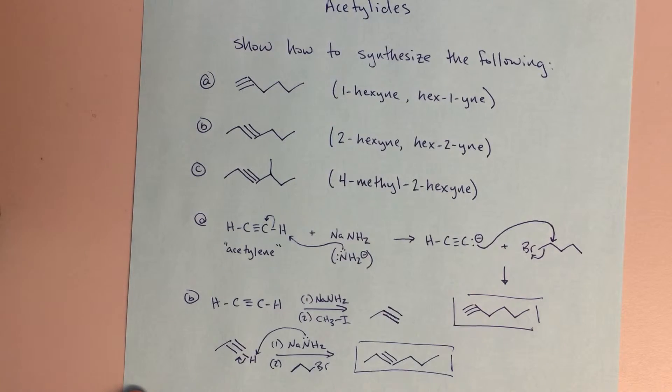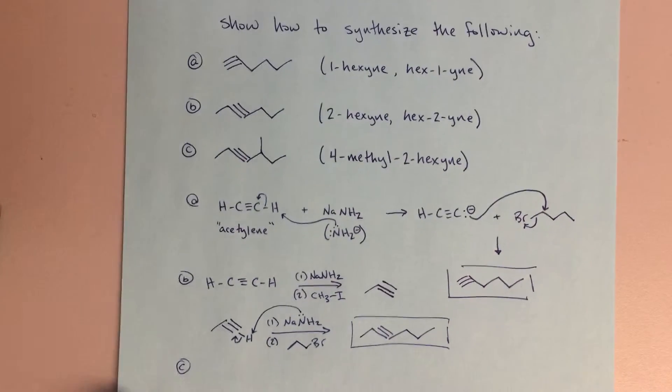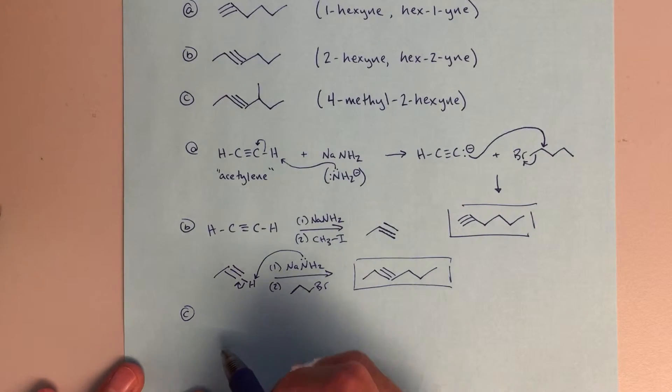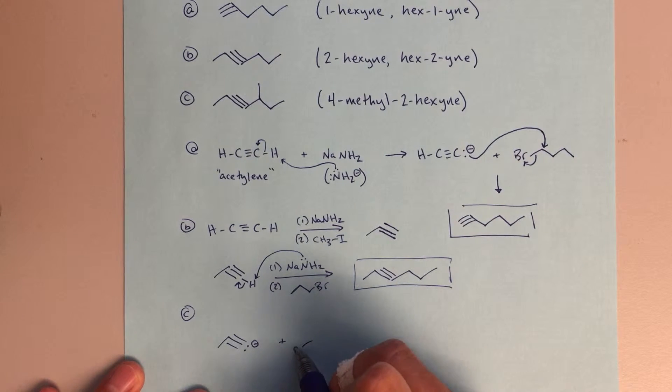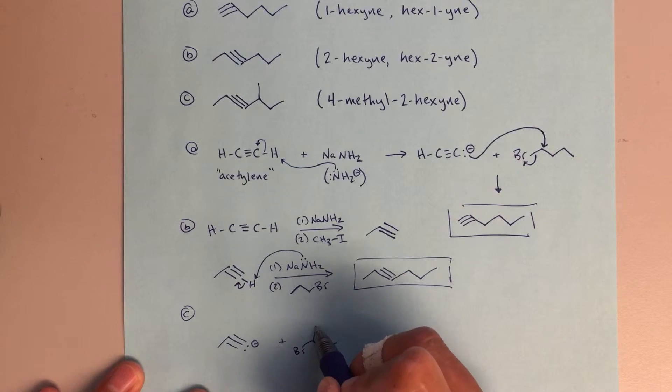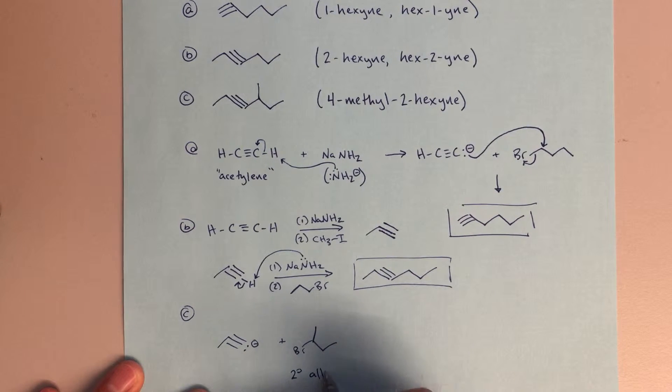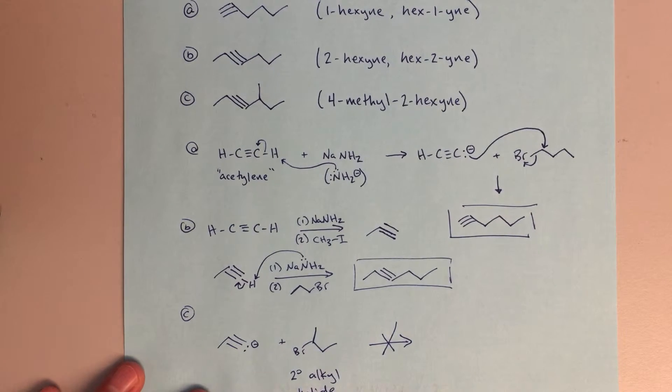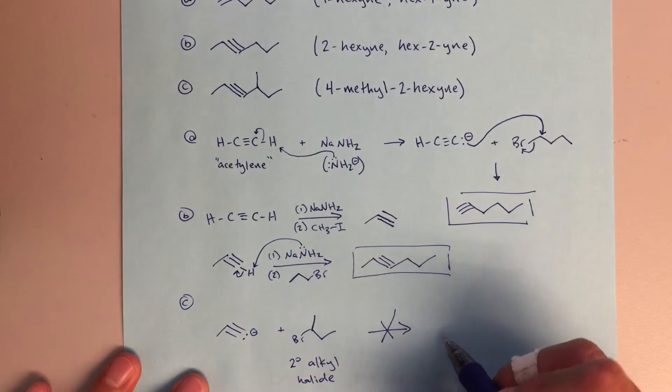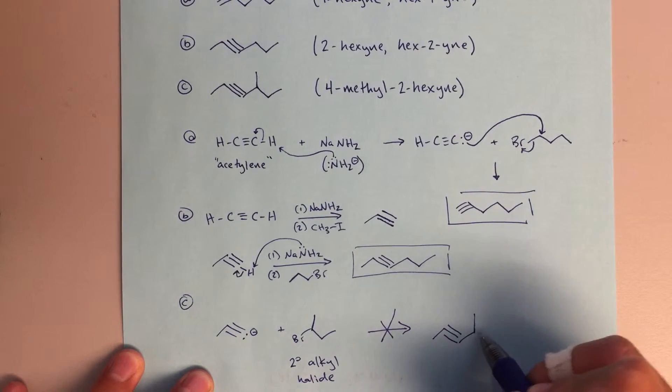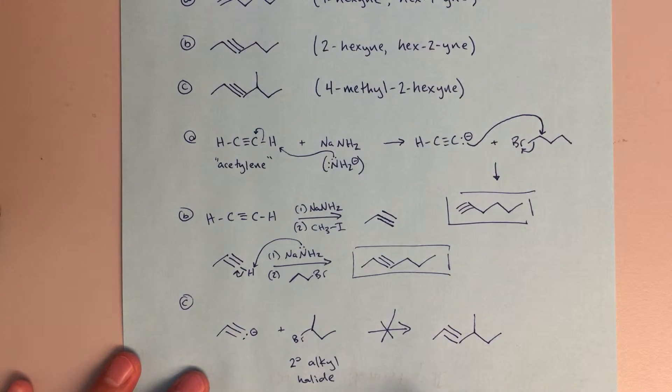In C, we're going to have to sort of start with this piece. This is going to be my ion that I will need, and I'm going to need to add that to a piece that looks like this. So this is going to be a secondary alkyl halide. This reaction is not really going to go. This is not really going to work. This reaction is going to go, but it's not going to give us our desired product. If this is our desired product, this is not going to work out. Let's talk about why that is.